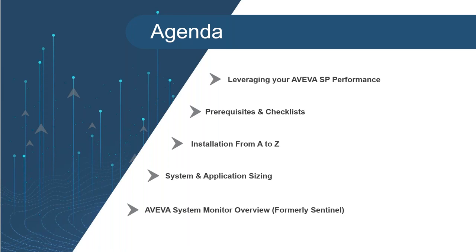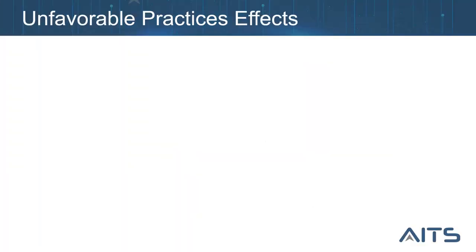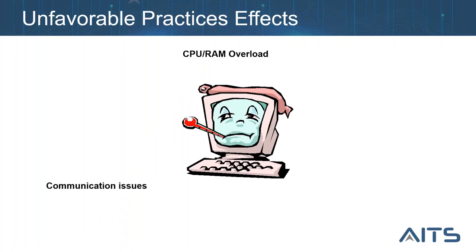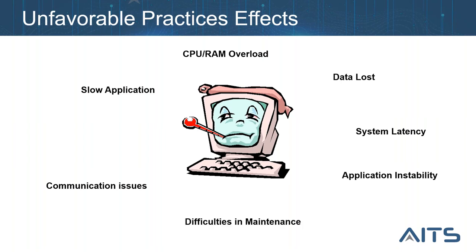Why do we need to follow these practices? If we don't, we'll find ourselves with an overloaded system — the CPU will be overloaded, the application will be slow, and there will be difficulties in maintenance and configuration. For example, if I didn't follow the recommendation for network configuration, I'll find communication issues, deployment issues, and it will end up with some data loss.